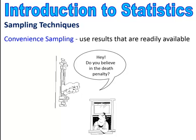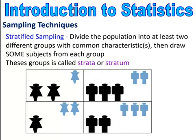The next sampling technique is called convenience sampling — you use the results that are readily available to you. It's easier to collect the data because they're right around you. Next is stratified sampling: you divide the population into at least two different groups with common characteristics, then you draw some subjects from each group. You divide it into groups and take pieces of each group to study. These groups are called strata, or a stratum.